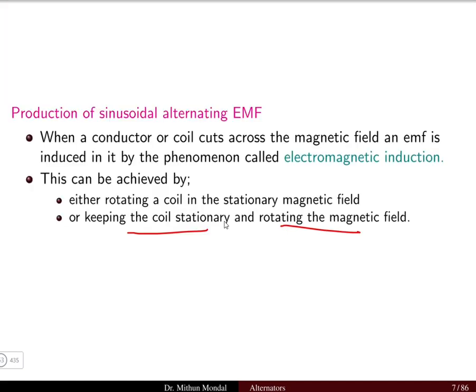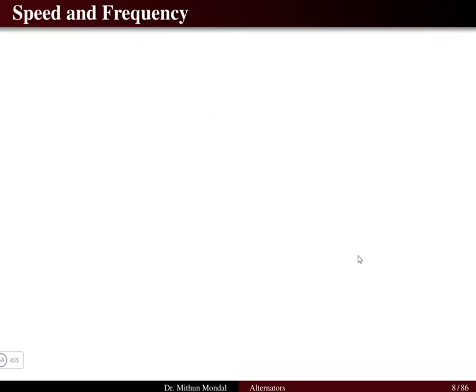In the first case where the field is stationary, this corresponds to the DC machine. Whereas with a rotating magnetic field, this is the case of the AC machine. So in a synchronous machine the field rotates whereas the conductor is stationary.